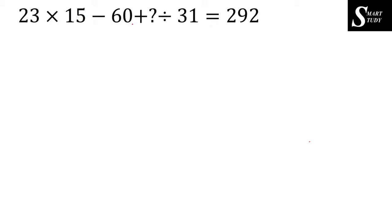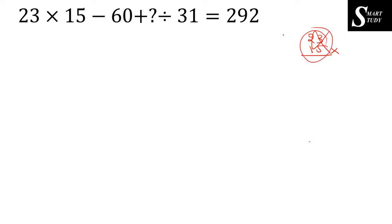The second question: 23 into 15 minus 60, plus question mark, divided by 31, is equal to 292. Here you should not simply multiply 23 into 15 the long way — you do not have enough time in the examination for that.